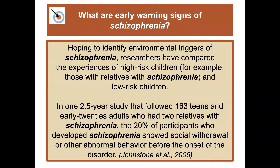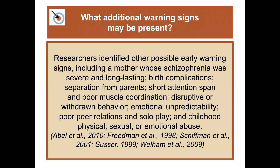What are some early warning signs of schizophrenia? Researchers have compared the experiences of high-risk children — those with relatives with schizophrenia — and low-risk children. In one two-and-a-half-year study following 163 teens and early 20s adults who had two relatives with schizophrenia, the 20% who developed schizophrenia showed social withdrawal or other abnormal behavior before the onset of the disorder. Other possible warning signs include a mother whose schizophrenia was severe and long-lasting, birth complications, separation from parents, short attention span and poor muscle control, disruptive or withdrawn behavior, emotional unpredictability, poor peer relations and solo play, and childhood physical, sexual, or emotional abuse.